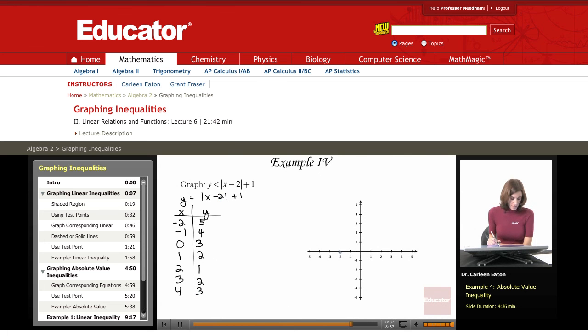Now I have enough values to work with. So negative 2, 5. Negative 1, 4. 0, 3. 1, 2. 2, 1. 3, 2. So you see the V forming, so I know I have enough points because I have both parts of my V.